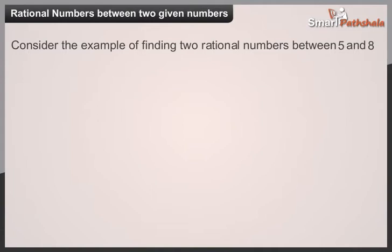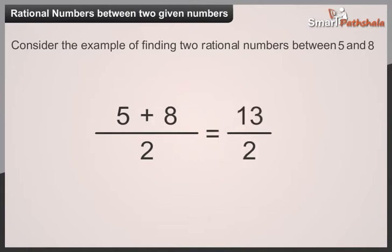Consider the example of finding two rational numbers between 5 and 8. A rational number between 5 and 8 is the sum of 5 and 8 and dividing the result by 2, that is 13 divided by 2.